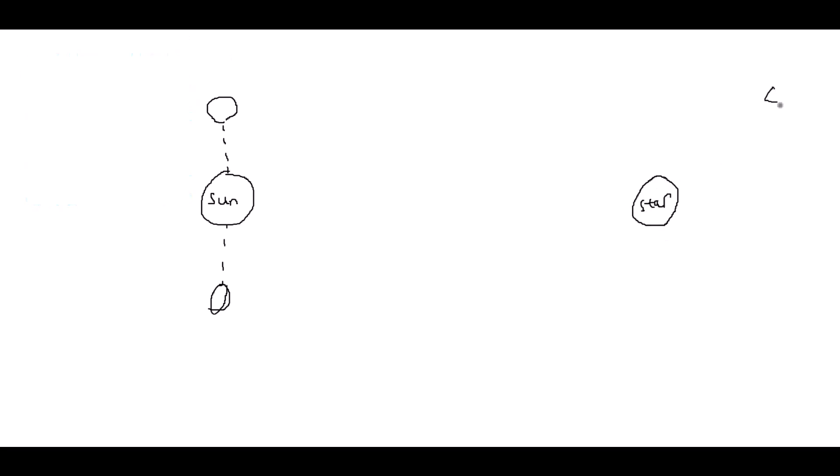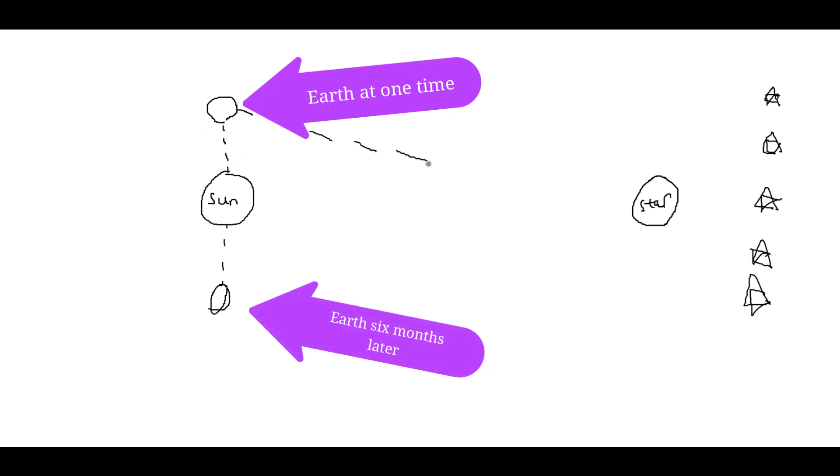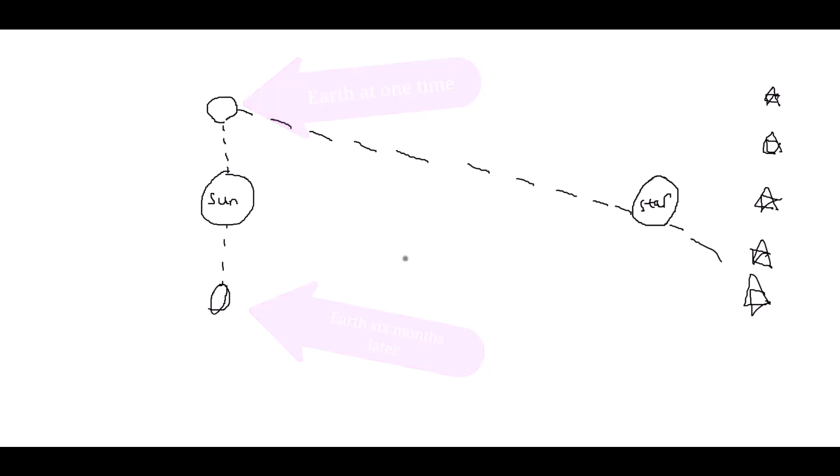Next up we have parallax. This is the apparent difference in position of a star on the sky when viewed from two different locations. These different locations are typically the earth at one point in the year and then the earth six months later although you can use different points which are closer or even further apart than that. Using trigonometry parallax can be a simple way to find distances to astronomically nearby objects in the sky. Obviously things that are closer shift by larger amounts when compared to much further away stars and so it's easier to measure the parallax.